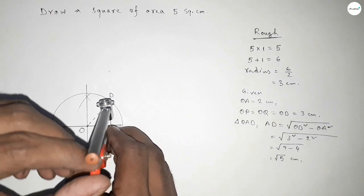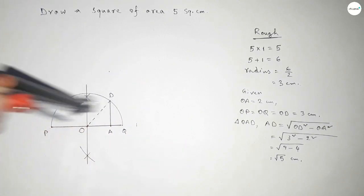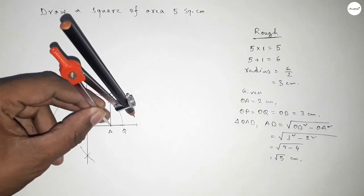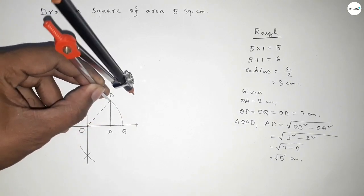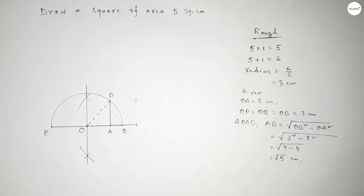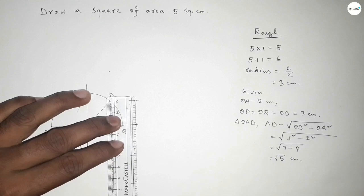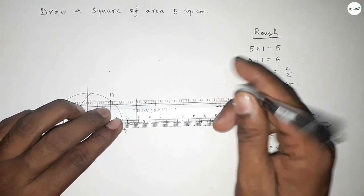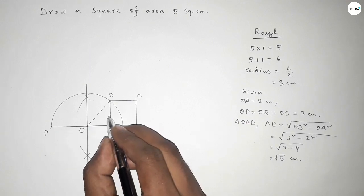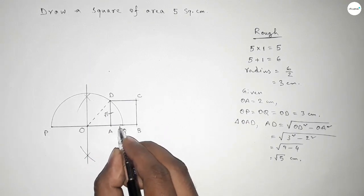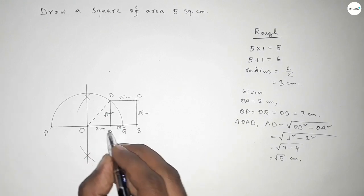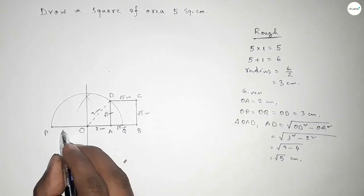Now taking the length AD equal to root 5 centimeters using compass and drawing an arc. Then extending the line PQ. Next, putting the compass with the same length and cutting arcs to find the remaining vertices. Both curves intersect at a point. Joining the sides — taking this as point B and this as point C. Each side is root 5 centimeters, and the relevant lengths are 2 centimeters and 3 centimeters as marked.